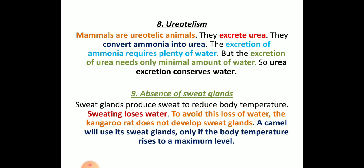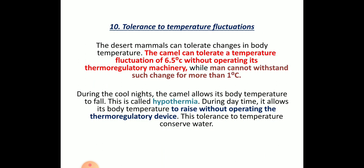The camel uses its sweat glands for regulating body temperature. During daytime when temperatures are very high, they regulate body temperature using sweat glands. Regarding tolerance to temperature fluctuation, the camel can withstand up to 6.5 degrees Celsius of fluctuation. In humans, even a one-degree increase in environmental temperature can raise or lower body temperature, potentially causing illness.